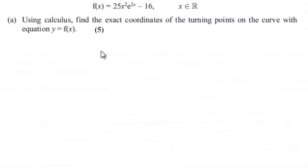Hi there. Now we're given the function f of x, which equals 25x squared times e to the power 2x minus 16, where x is any real number. And using calculus, we've got to find the exact coordinates of the turning points on the curve with equation y equals f of x for 5 marks.